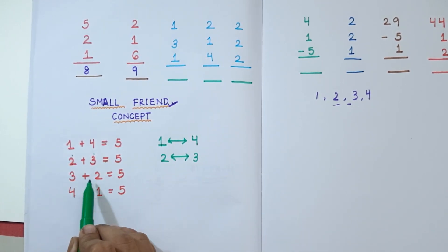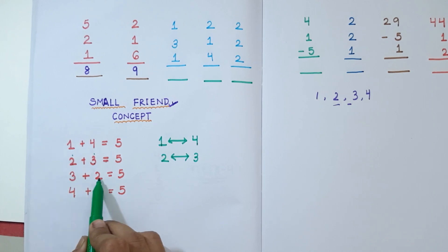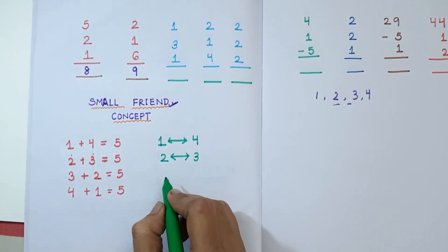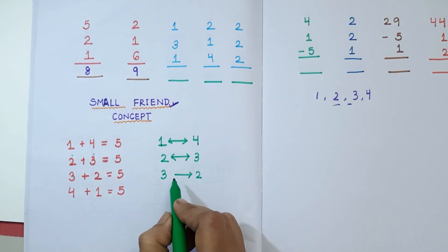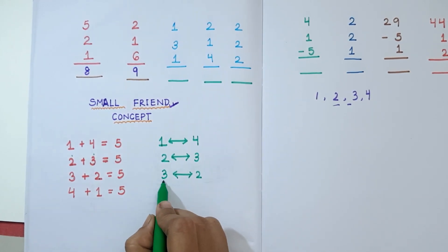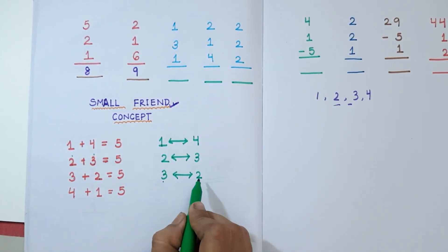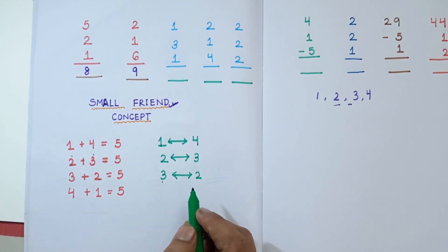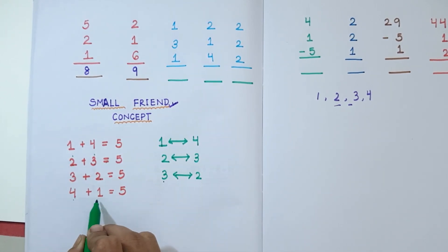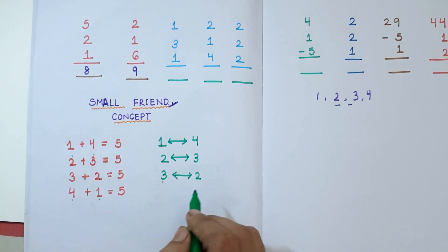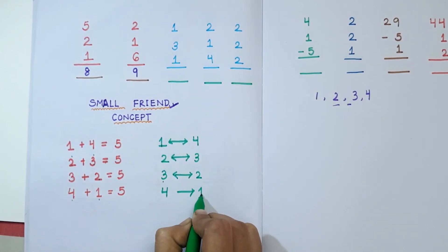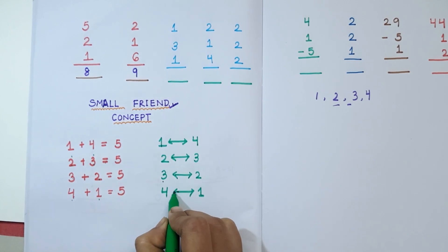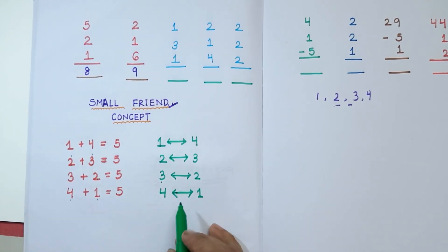In the third equation, 3 plus 2 equals 5, so 3 is the small frame of 2 and 2 is the small frame of 3 — they are small frames of each other. In the last equation, 4 plus 1 equals 5, so 4 is the small frame of 1 and 1 is the small frame of 4 — 4 and 1 are small frames of each other.